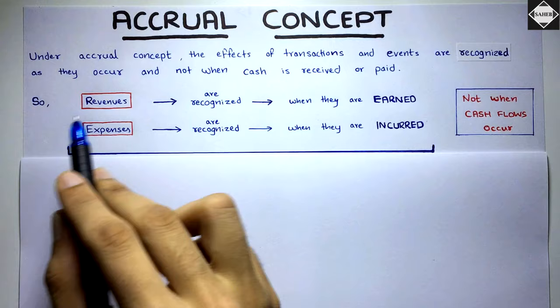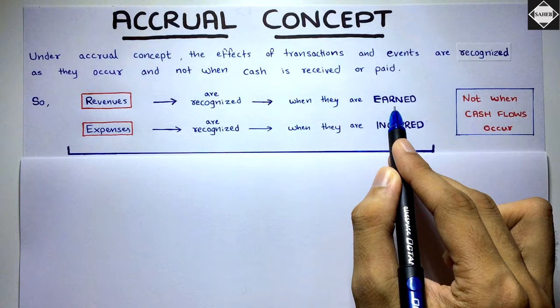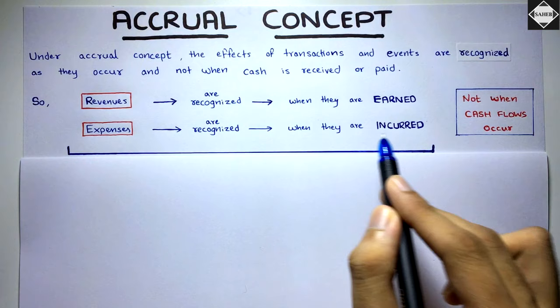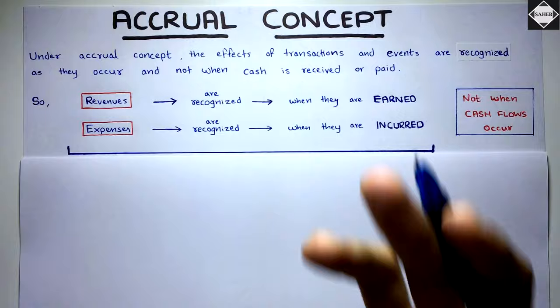Under the accrual concept, revenues and incomes are recognized as and when they are earned — when you invoice your customer — and expenses are recognized as and when they are incurred.